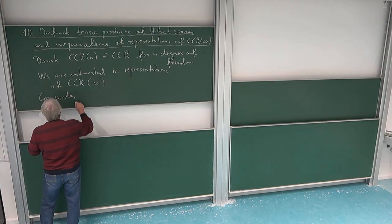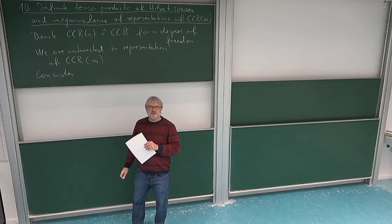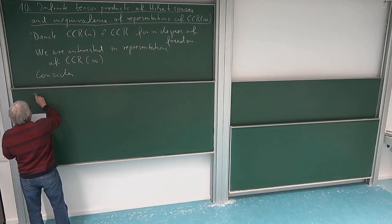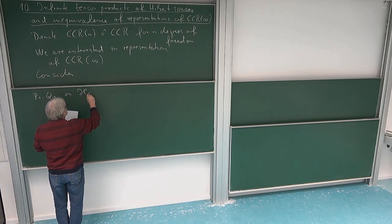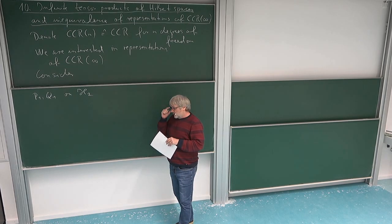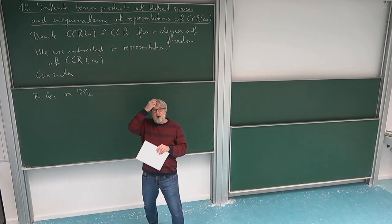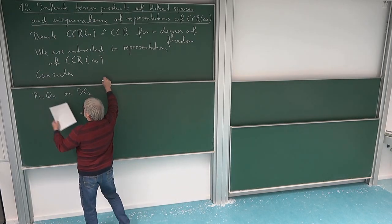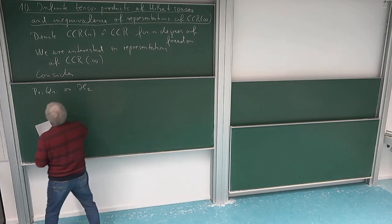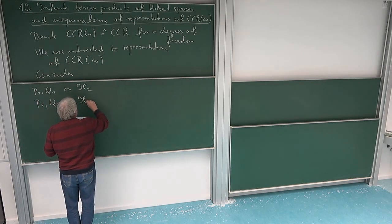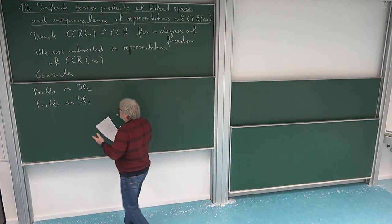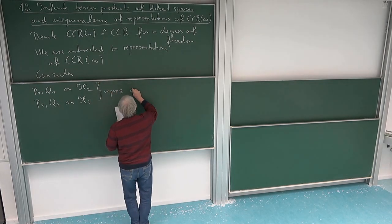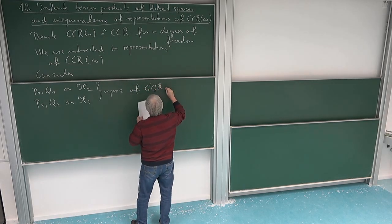Let us consider representations for the case of one degree of freedom — say our Schrödinger representation, taking it twice on perhaps different Hilbert spaces. So we consider P1 and Q1 on H1. To make it rigorous and avoid dealing with domains of unbounded operators, we should use the Weyl relations and Weyl operators. But on a formal level, let's write it in terms of P and Q. Assume P1, Q1 act on H1 and P2, Q2 act on H2, each being a representation for one degree of freedom, with the commutator of P and Q equal to minus i times the identity.